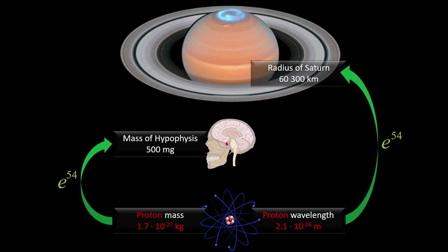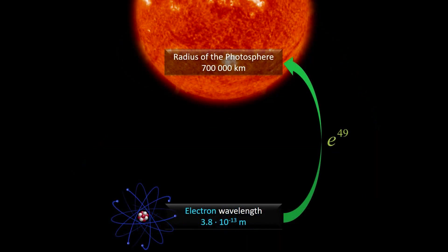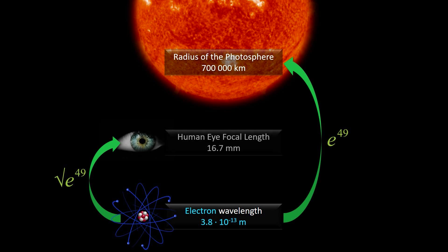Now let's come back to our Sun. The radius of 700,000 kilometers of the photosphere of our Sun approximates the 49th power of Euler's number relative to the Compton wavelength of the electron. Multiplying the electron wavelength by the square root of the 49th power of Euler's number, we match exactly the focal length of 16.7 millimeters of the human eye. This is also the size of the newborn eyeball.